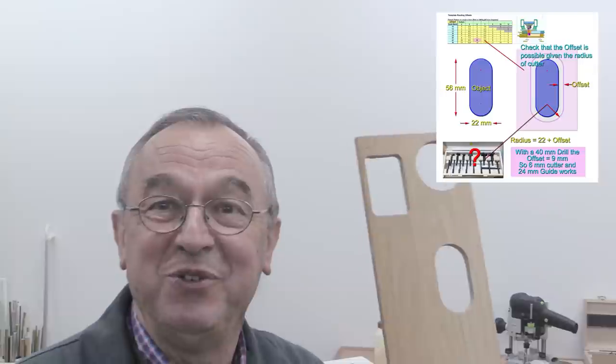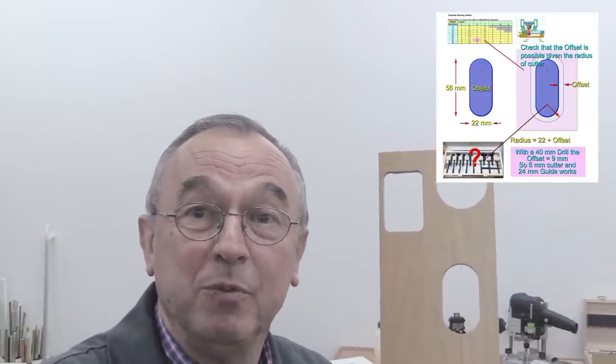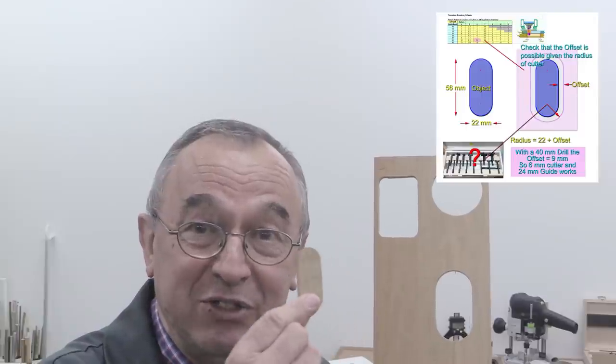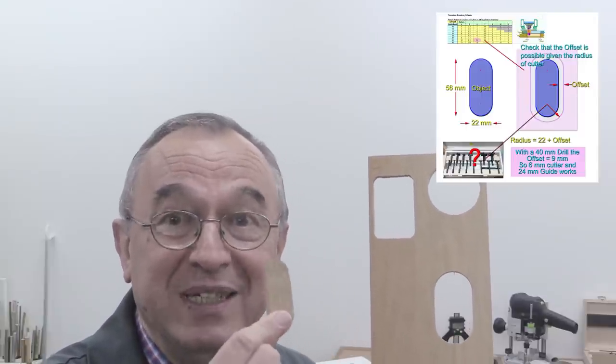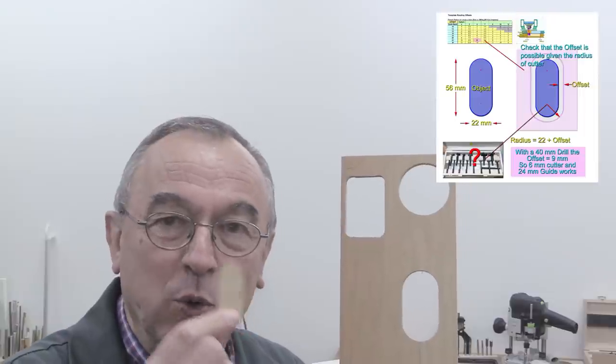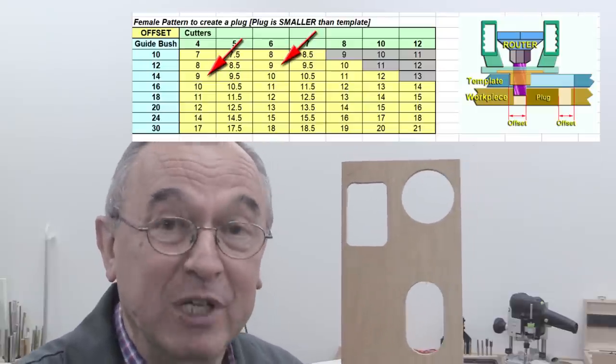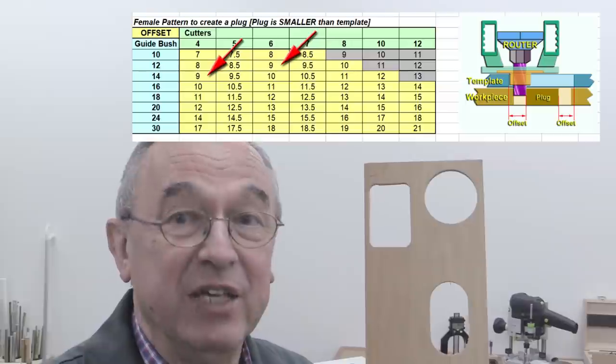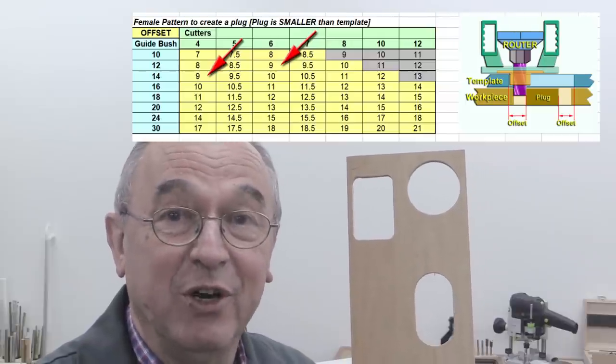Now, just jumping forward a bit, if you've actually created your template and you want to now produce something exactly the same size as the object that you were producing the template for, then all you do is look at the plug table and look for, in this case, a 9mm offset.